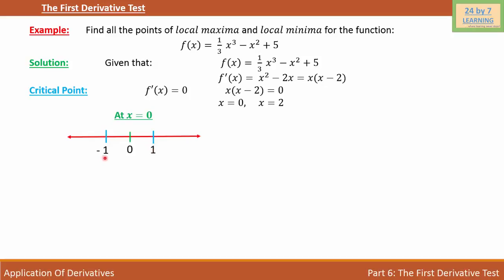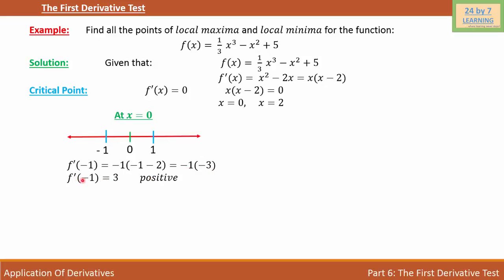Let's find the value of the first derivative at x = -1. So f'(-1) = (-1) times ((-1) - 2) = (-1) times (-3) = 3. So f'(-1) = 3, which is a positive number. If you take any value on the left of 0, you get a positive value for the first derivative.